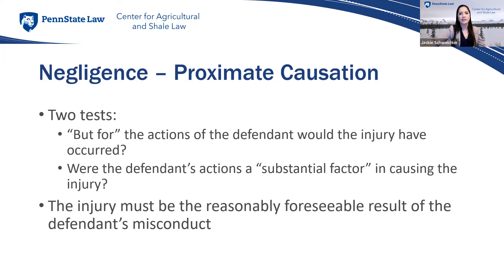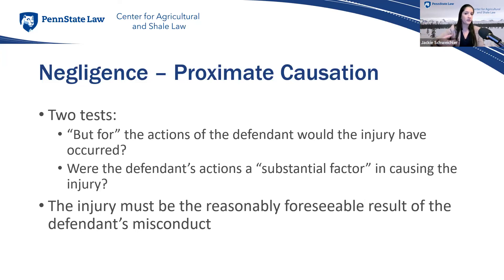In a more likely scenario, if Farmer Larry leaves tools on the ground near the blueberry buckets and a guest trips and twists their ankle, this would meet both proximate causation tests — but for the tools, the guest wouldn't have tripped; the tools are a substantial factor; and a twisted ankle is a reasonably foreseeable result of leaving tools in a walkway. Farmer Larry's actions would very likely be considered proximate causation.